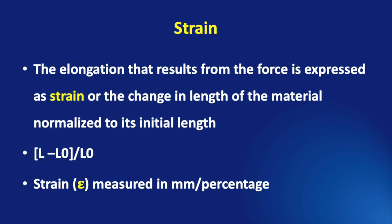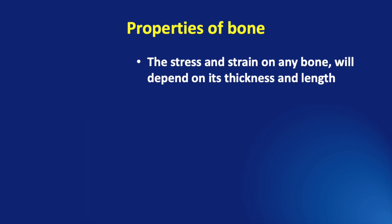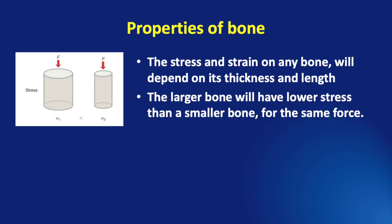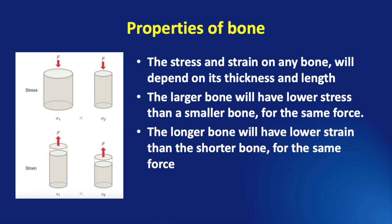This apparent lengthening of the bone, though very minimal, occurs because of the collagen fibers present within the bone. The stress and strain on any bone will depend on its thickness and length. A larger bone will have lower stress than a smaller bone for the same force applied, because stress is more about a compression force. On the other hand, a longer bone will have a lower strain than a shorter bone for the same force, because strain is about tensile strength that is trying to lengthen the bone.